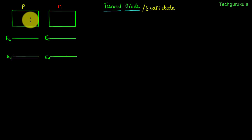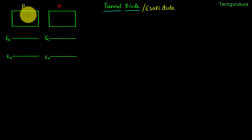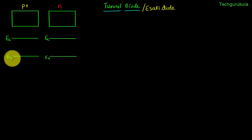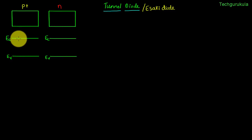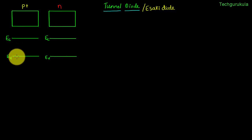For tunnel diodes the doping that we do would be really very high. On the p-side if we heavily dope it — we can call it p++ because it is heavily doped — when doping is increased the Fermi energy level moves very close to Ev. In this case the semiconductor itself becomes degenerate, and as a result the Fermi energy level not just moves close to Ev, instead it goes into the valence band.